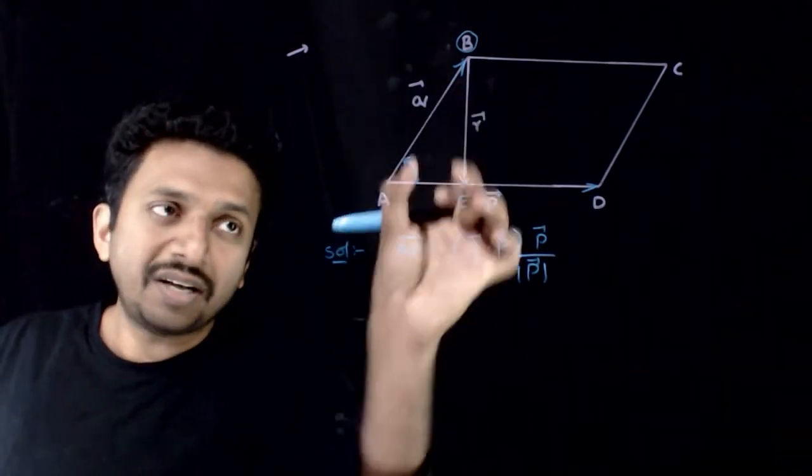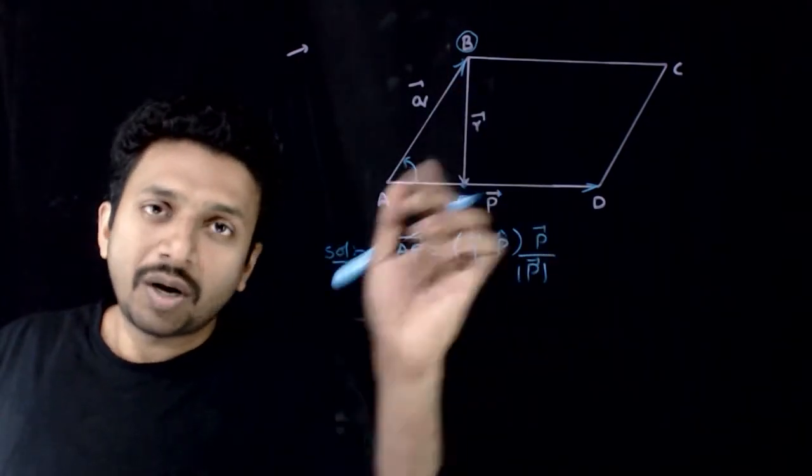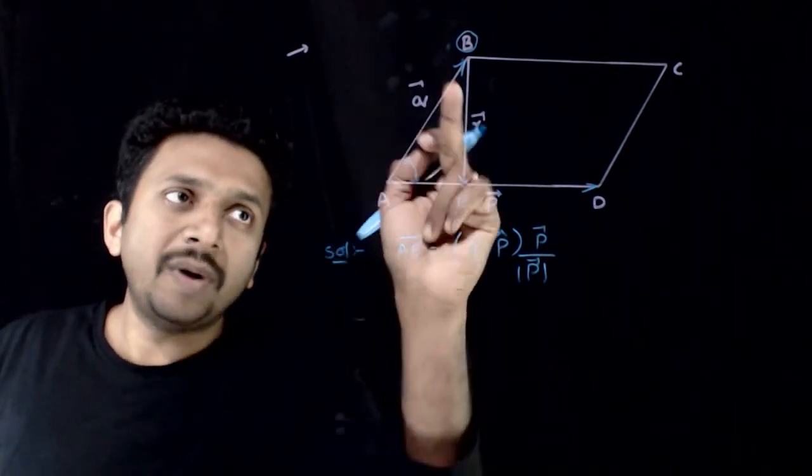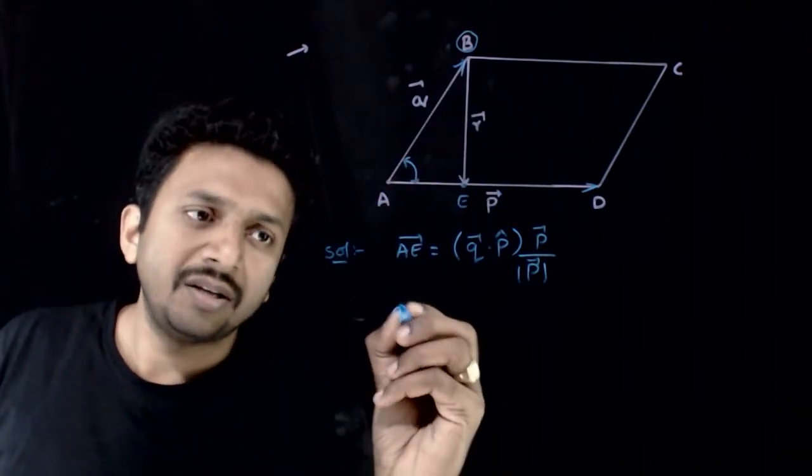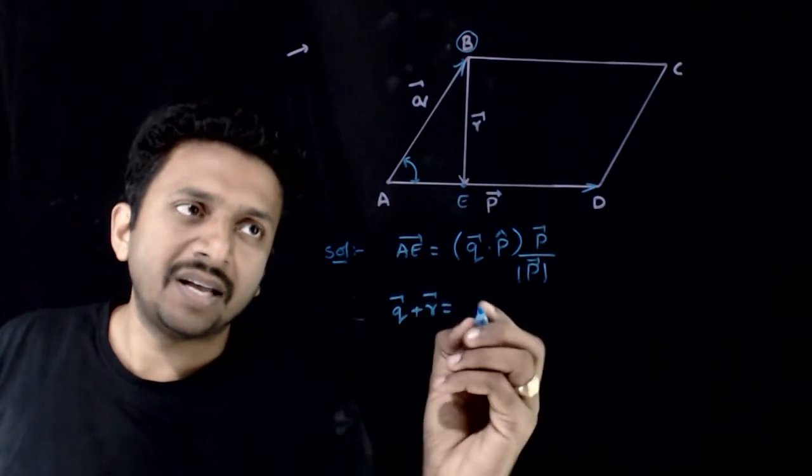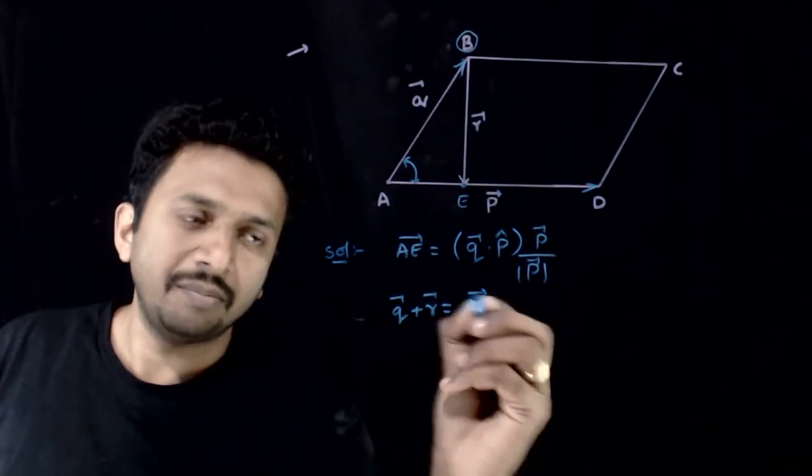Now you know this vector and this vector in this triangle. So what is R bar? Q bar plus R bar is equal to AE bar.